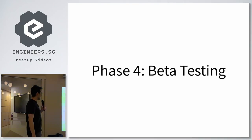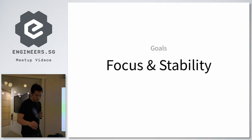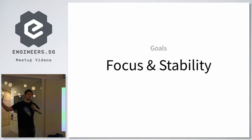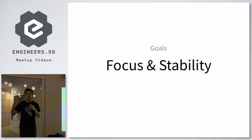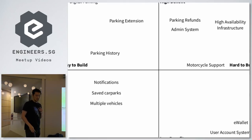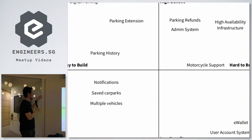Which brings us to phase four: beta testing. Beta testing is about focus and stability. Alpha testing is about divergence; beta testing is about convergence. It's about taking all those ideas you've explored and slicing them down to what you think the final concrete form of your app wants to be. And a lot of this is just about prioritizing tasks — a basic cost-benefit chart.